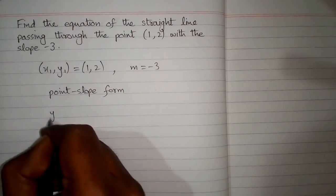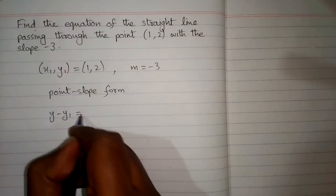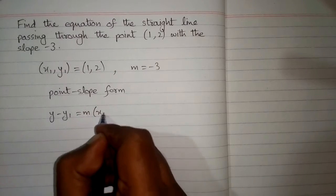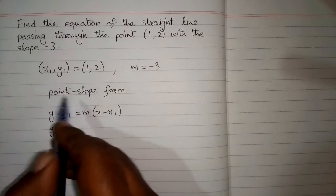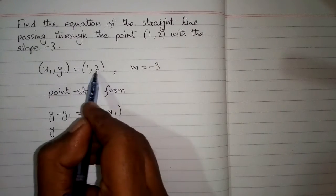So the point slope form is y minus y1 is equal to m times x minus x1. So we can see that the value of y1 is 2.